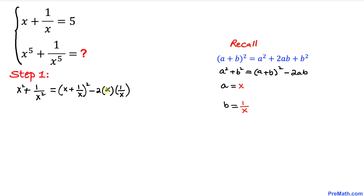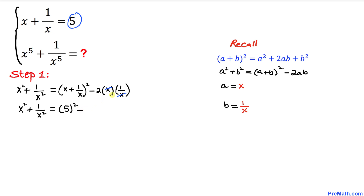We can see that x and 1 over x cancel out, and we know that x plus 1 over x has the value 5. So therefore x squared plus 1 over x squared equals 5 squared minus 2, which is 25 minus 2. Therefore our x squared plus 1 over x squared value turns out to be 23.